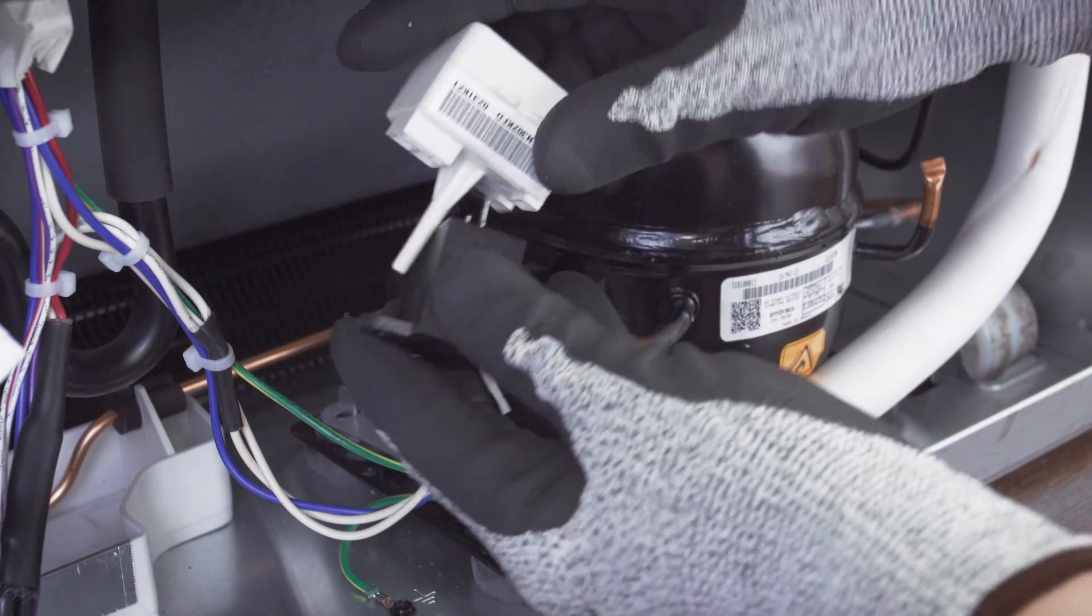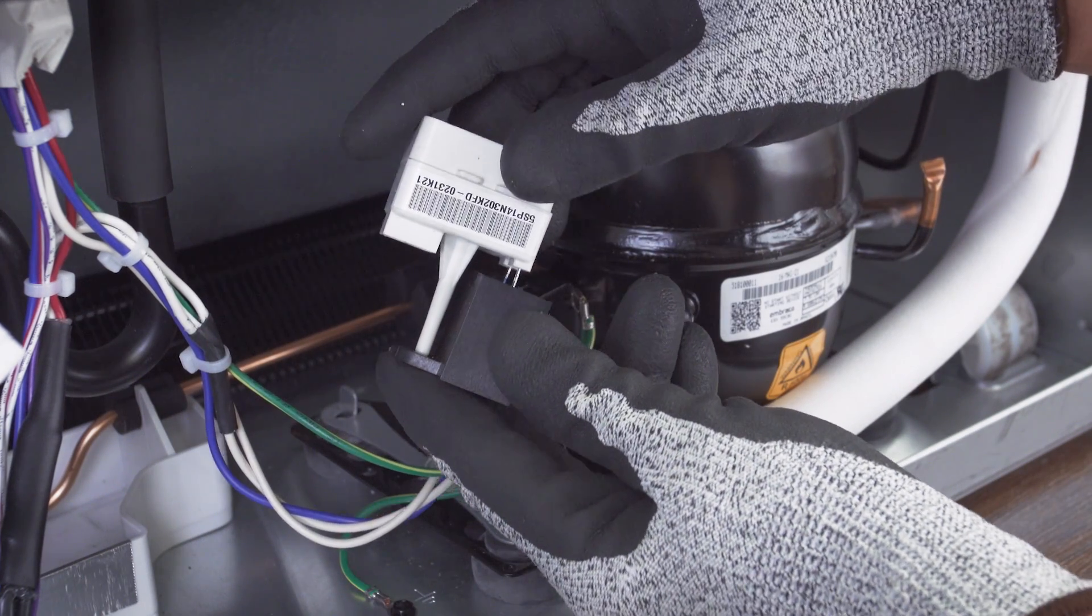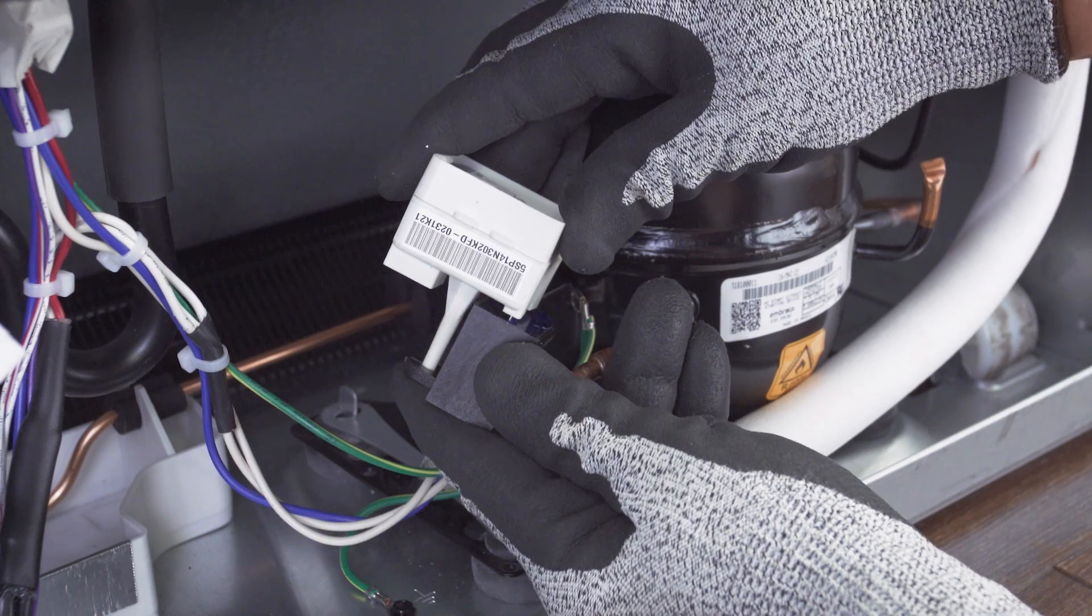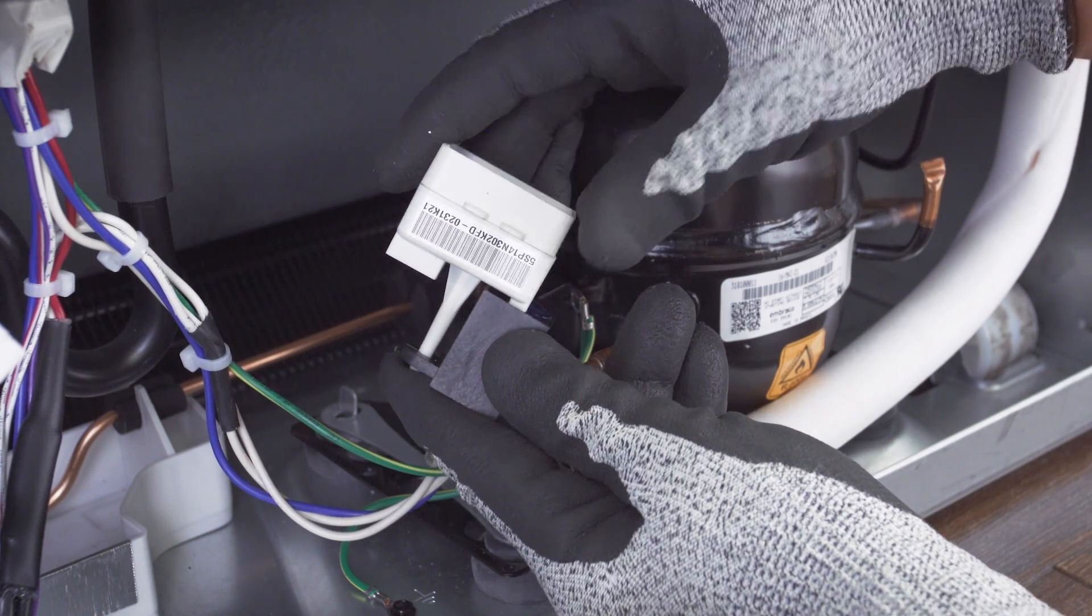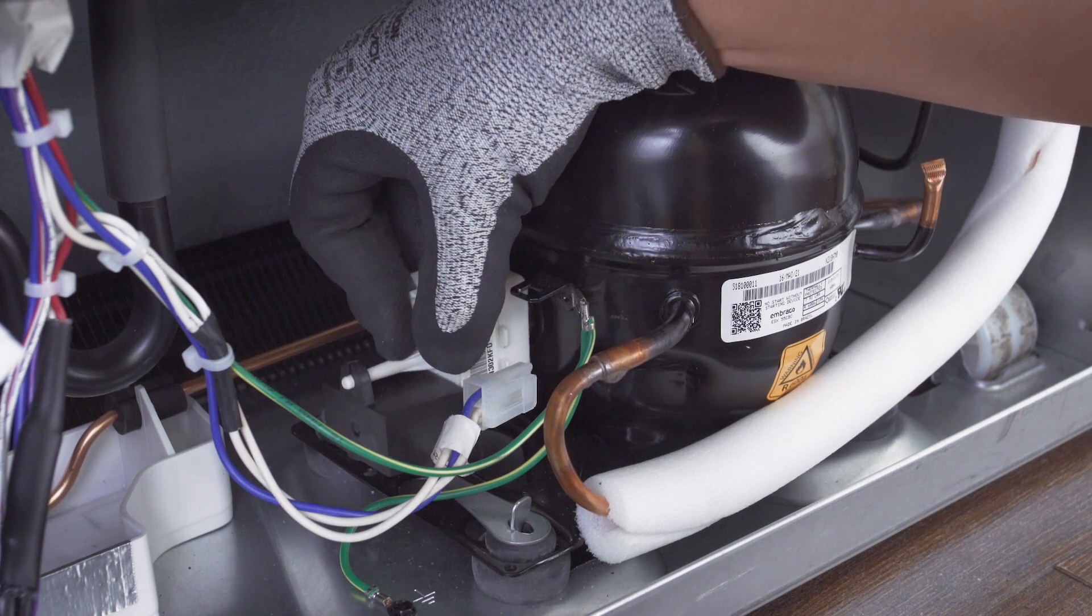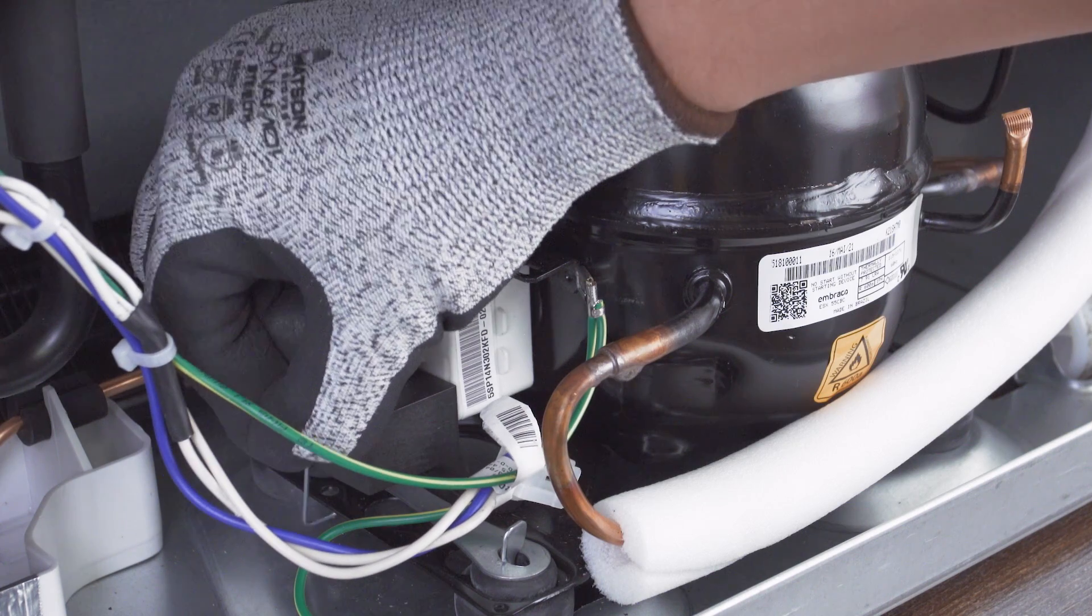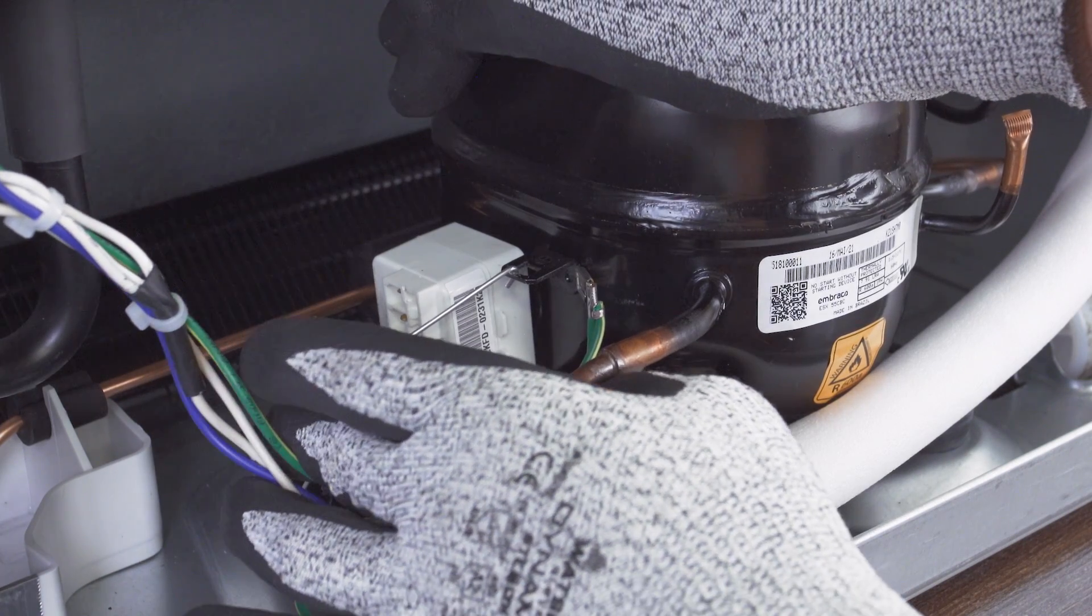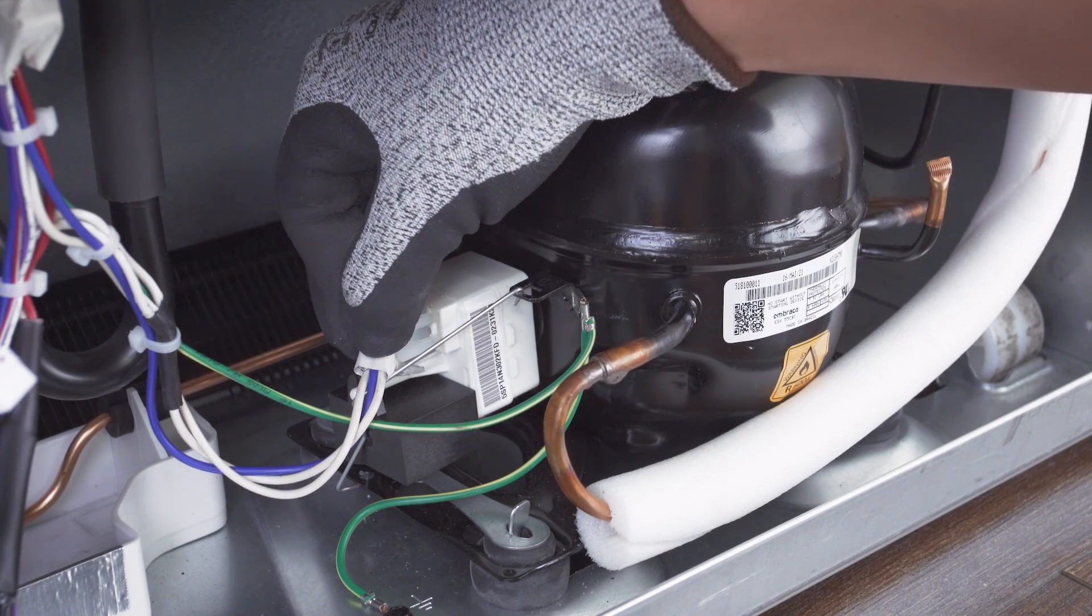If your capacitor attaches to the combination relay, then align the mounting pin and push it into place. Next, align the relay and attach it to the compressor. Now attach the retaining clip. Finally, reconnect the wires.